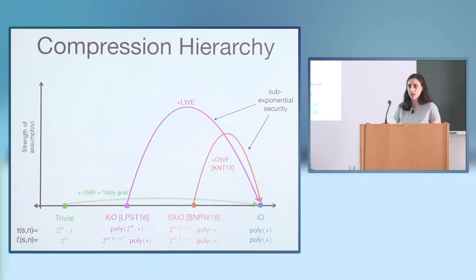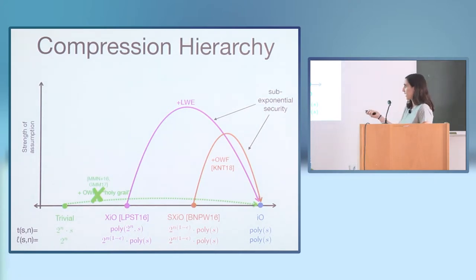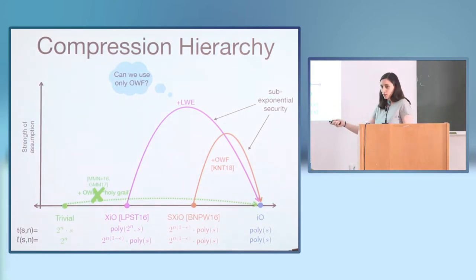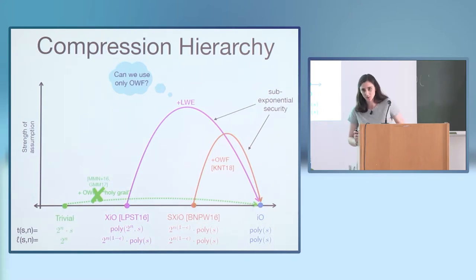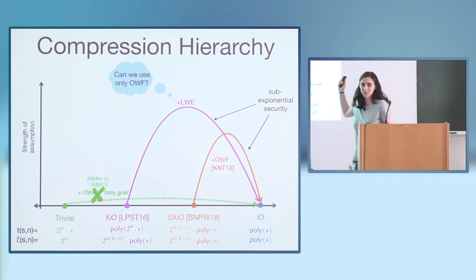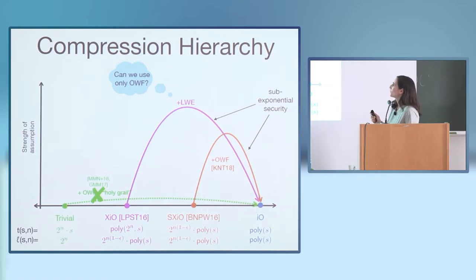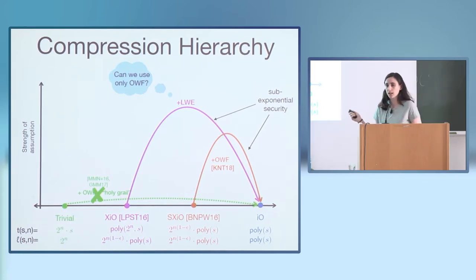The holy grail in this area would be to base IO on something like one-way functions, but we know that's very unlikely. Still, there are interesting questions we can ask — for example, why do we need LWE when we assume XIO? Is it really inherent, or could we maybe get IO from XIO assuming only one-way functions? There's a huge setting of parameters for compressing obfuscation that we don't know a lot about, and in this work that's what we look at.